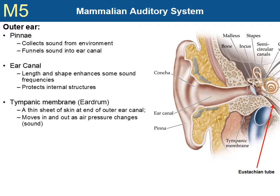We'll now begin our overview of the auditory system. The pinna is the part of the ear that we see, and serves to funnel sound into the ear canal. The length and shape of the ear canal enhances some sound frequencies, helping us hear them better. It also protects the delicate inner structures. One of these inner structures is the tympanic membrane, or eardrum — a thin sheet of skin at the end of the ear canal. It is the division between the outer and middle ear, and forms a complete seal across the ear canal.